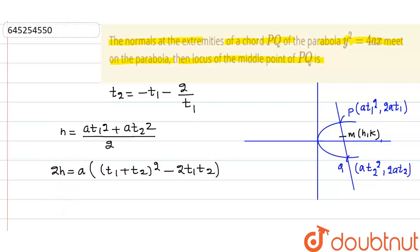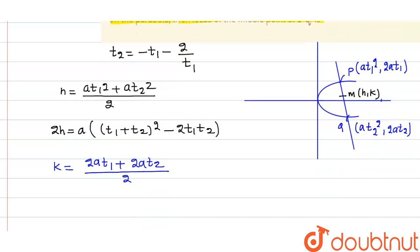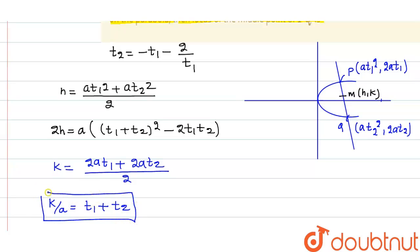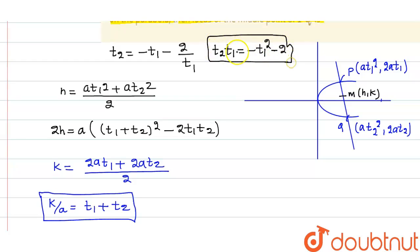Similarly, k = (2at₁ + 2at₂)/2, so k/a = t₁ + t₂. Now from the normal relation, t₂ = -t₁ - 2/t₁, so multiplying gives t₁t₂ = -t₁² - 2.